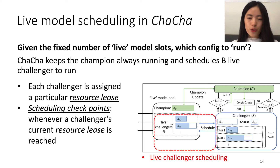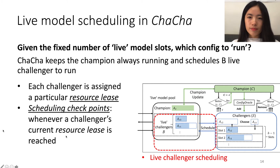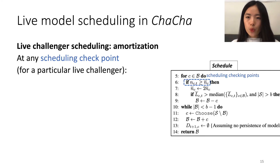With this notion of resource leads, we have scheduling checkpoints, which are the time points where any Challenger's current resource leads is reached, and we do scheduling only at those checkpoints. At a particular scheduling checkpoint, which concerns a particular live Challenger, we take the following actions.